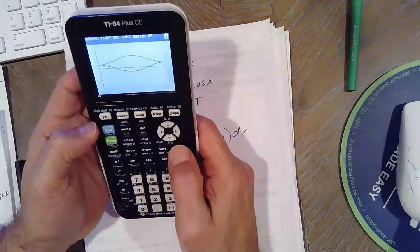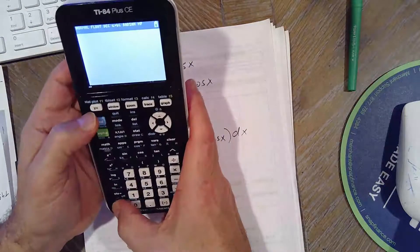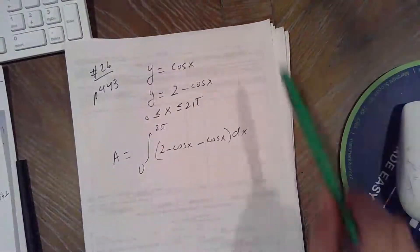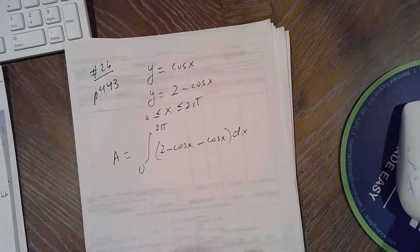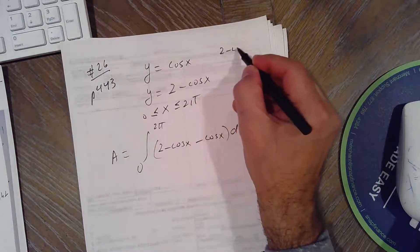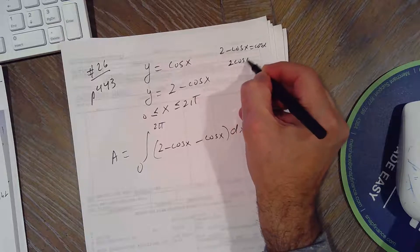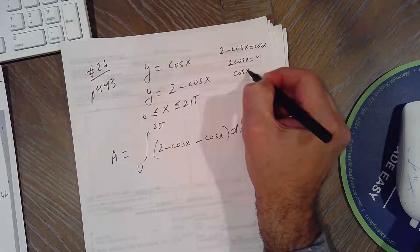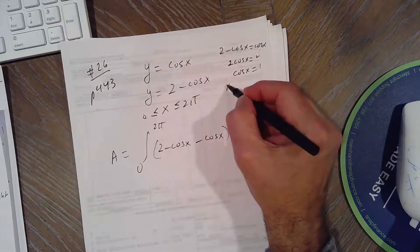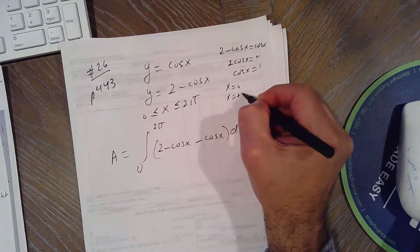Now if you want to see where they intersect algebraically, you could set them equal. If you want to see that algebraically, you can set them equal to each other. 2 minus cosine X equals cosine X, 2 equals 2 cosine X, cosine X equals 1. So between 0 and 2π, it's at 0, it's at 2π. That's why.